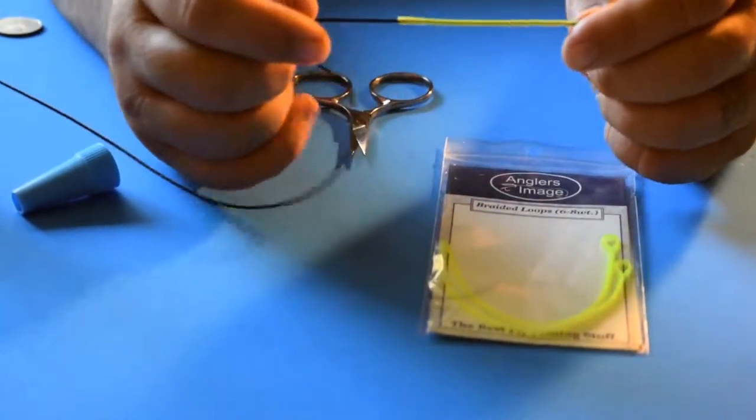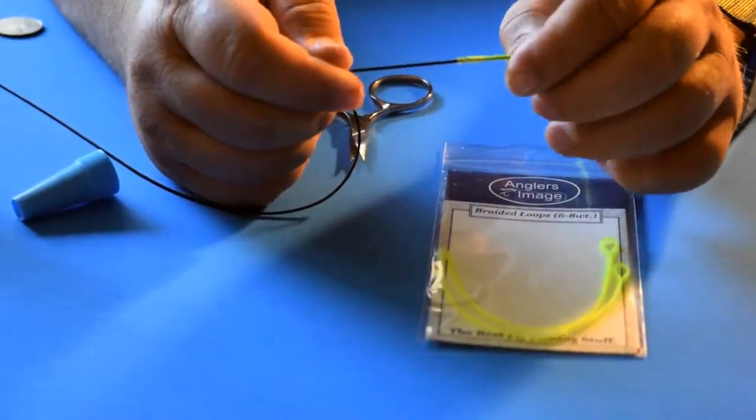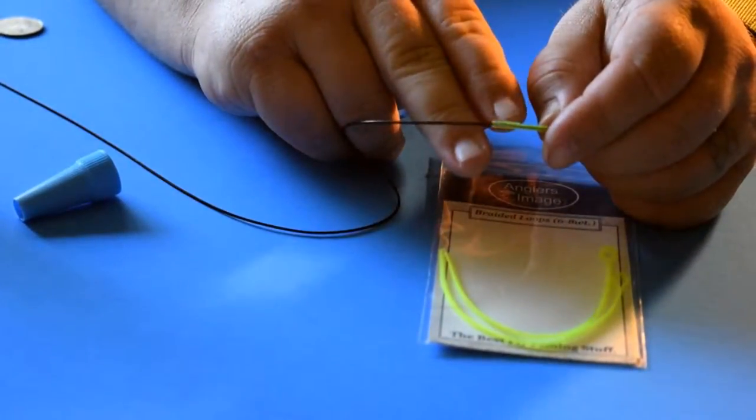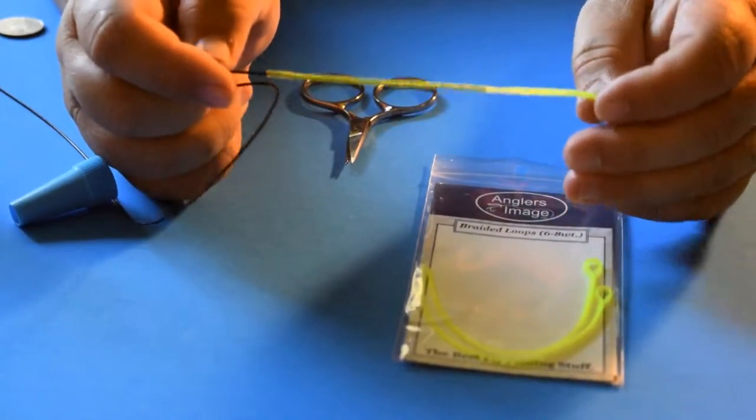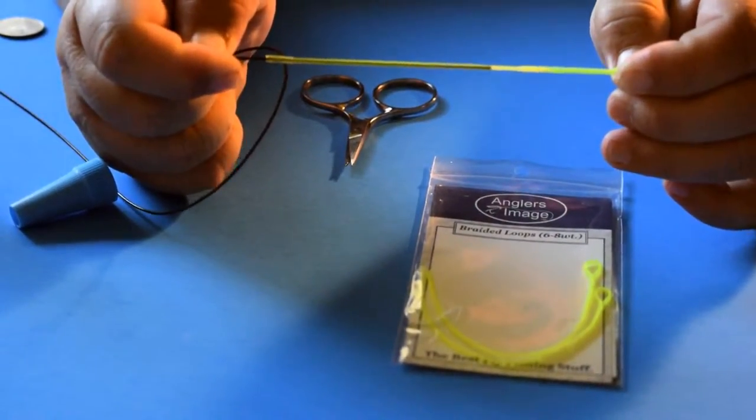Glue my fingers together. Now that clear plastic grommet kind of bridges the gap between your fishing line and the braid. It's never coming loose. The only way you're going to get this off there is to cut it.